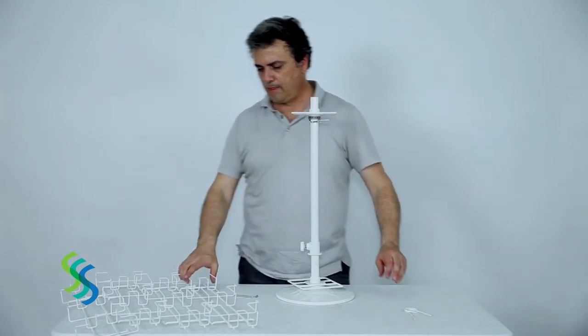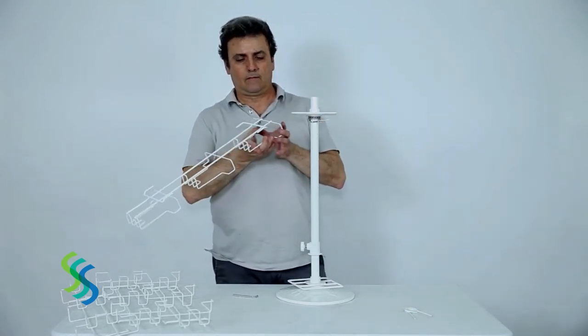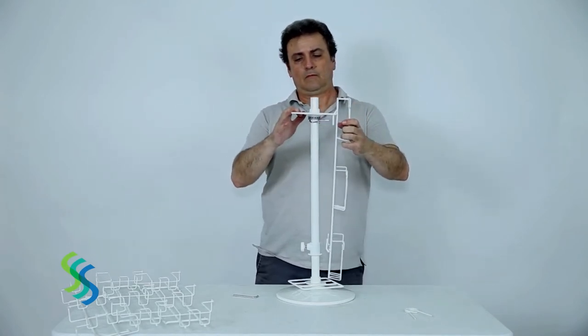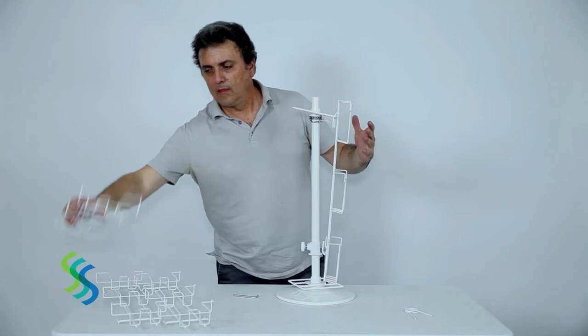Hang two wire panels on the top square frame, each on opposite sides. Hang a third panel on the upper square frame on one of the open sides of the assembly unit.